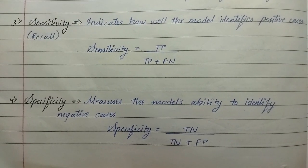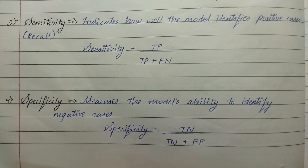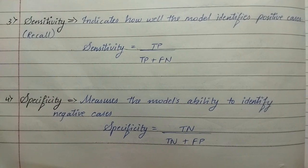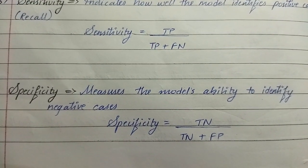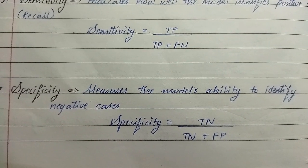The fourth matrix is specificity. It measures the model's ability to identify negative cases. The formula for specificity is true negative upon true negative plus false positive.